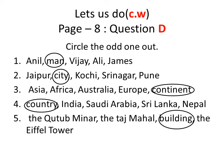Let's go to the next exercise on page 8, Question D. Students, while doing the classwork, you should write today's date also. The question says: circle the odd one out. For example, the first set is: Anil, Man, Vijay, Ali, and James. From this, only Man is a common noun; the remaining are proper nouns. So we have to circle Man.